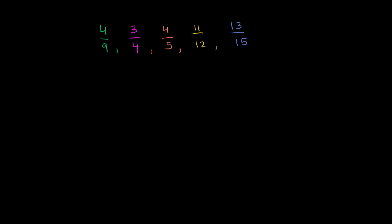What I want to do in this video is order these fractions from least to greatest. The easiest way, and the way that I think we can be sure we'll get the right answer, is to find a common denominator. Because if we don't find a common denominator, these fractions are really hard to compare: 4/9 versus 3/4 versus 4/5, 11/12, 13/15. You can try to estimate them, but you'll be able to directly compare them if they all had the same denominator. So the trick here is to find that common denominator.